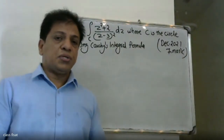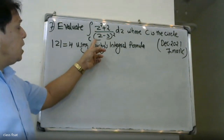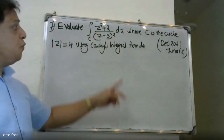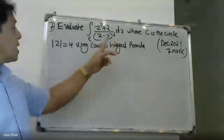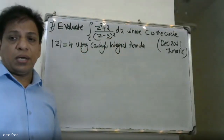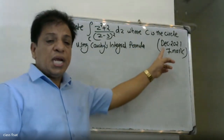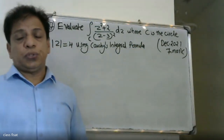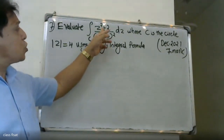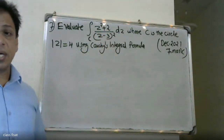Good morning students. Evaluate the integral of C: (z² + 2) / (z - 3)⁴ dz, where C is the circuit |z| = 4. We will use Cauchy's integral formula for derivatives. The function is f(z) = z² + 2 divided by (z - 3)⁴.